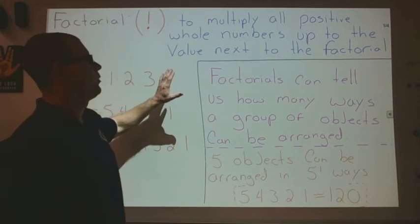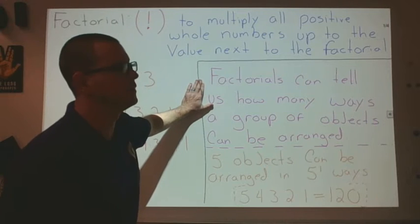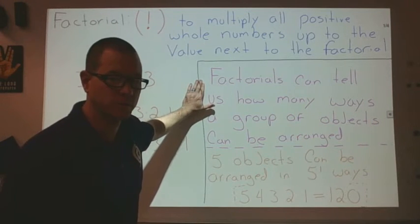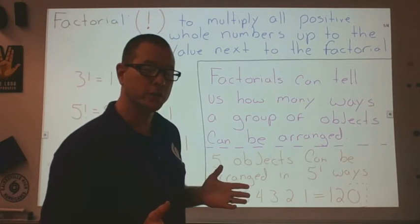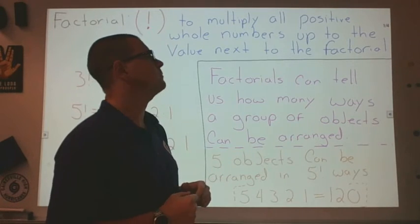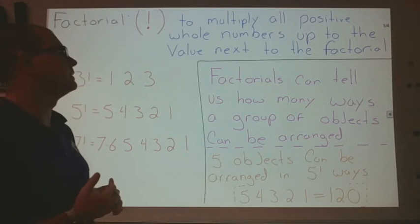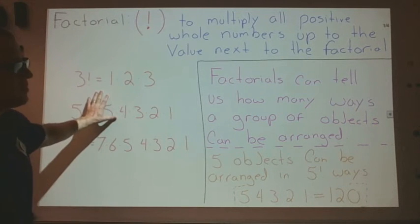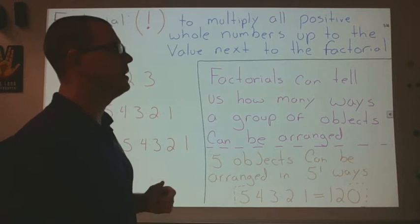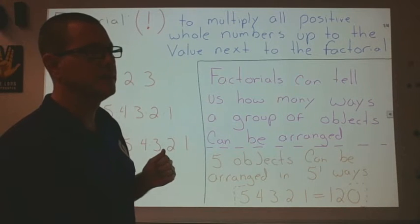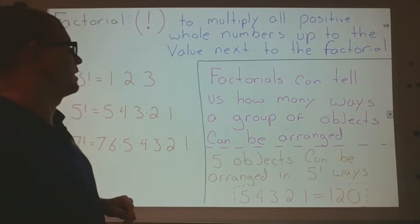As we get into larger sets of objects, rather than just a single probability, but the probability of multiple things occurring, we have to look at how we're going to group these events. And that is where permutations and combinations come in, typically looking at the same event occurring and how many different ways it can occur.